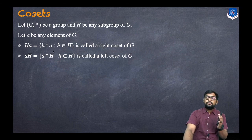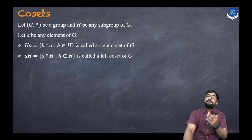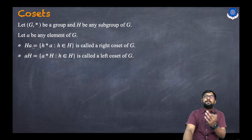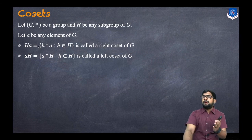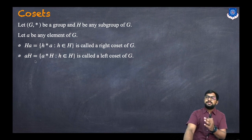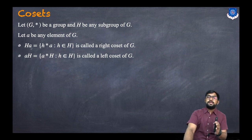So, a right coset means we are operating from the right — that is Ha — and a left coset means we are operating from the left — that is aH. Note that the operation is not necessarily multiplication; it can be a different operation.